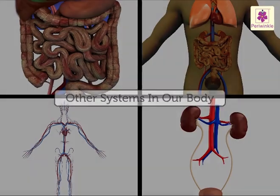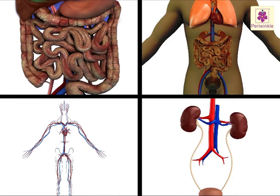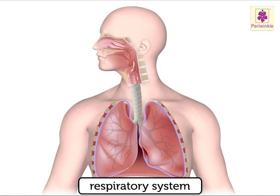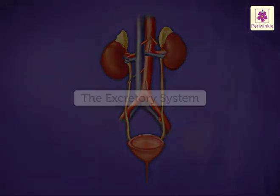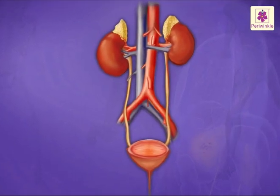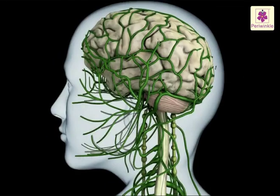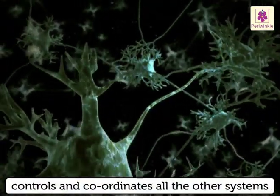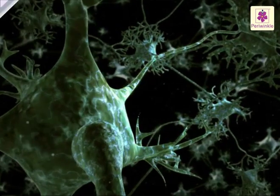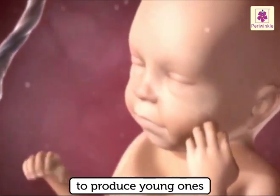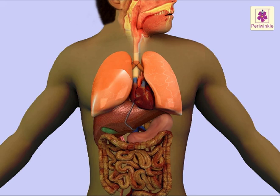We have other systems in our body besides the digestive, circulatory, and respiratory systems. They are: the excretory system, which helps us to throw out waste products produced in our bodies in the form of urine and sweat; the nervous system, which controls and coordinates all the other systems; and the reproductive system, which helps us to produce young ones or babies. Isn't our body such a wonderful machine?